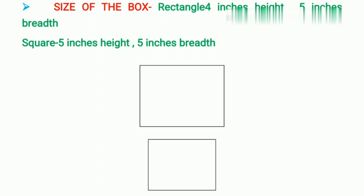Let's come to the structure section. In order to design a poster, the first thing you require is a box. After getting the question paper, you have to make a box and then only you will start designing. The box can be in rectangle form — length of five inches, breadth of four inches — or in a square form, five by five. Regarding size, there is no strict rule, but having an idea of the size in mind will save your time.